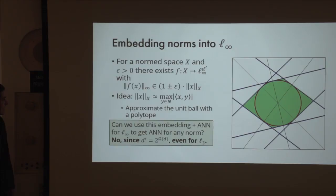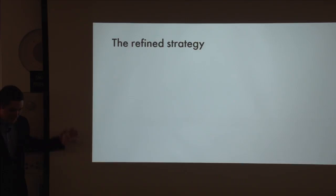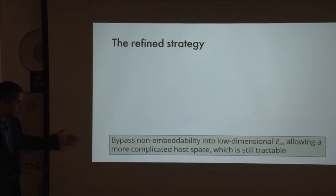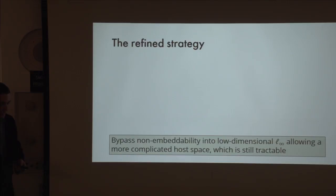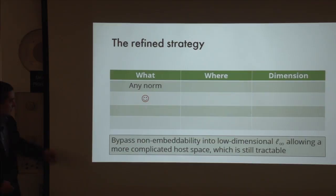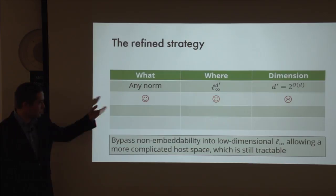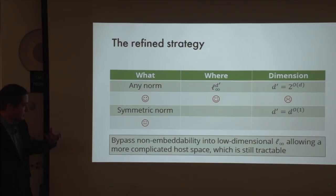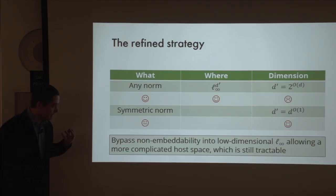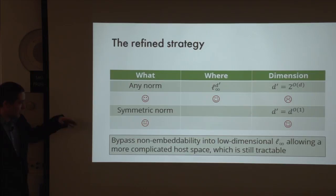This approach fails, but a modification of it works. Instead of embedding into L-infinity, if our norm is symmetric we will embed it into a space that is still tractable but more forgiving—it allows hosting our space without such an exponential blow-up in dimension. Before, we could embed any norm into D-prime dimensional L-infinity at the cost of exponential blow-up. The new result says: if your norm is symmetric, we can have only polynomial blow-up in dimension, which makes our algorithm actually work and very efficient. However, the new space will not be L-infinity—it will be something more complicated.